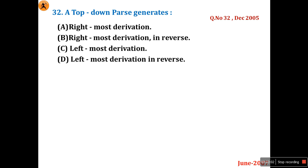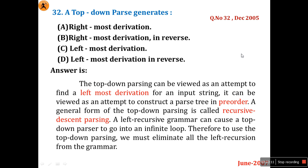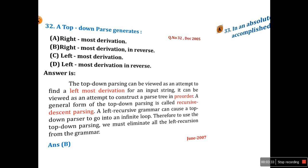This same question was asked in December 2005. Top-down parsing can be viewed as an attempt to find a leftmost derivation for the input string, and it can be viewed as an attempt to construct a parse tree in pre-order. So the right answer is leftmost derivation.